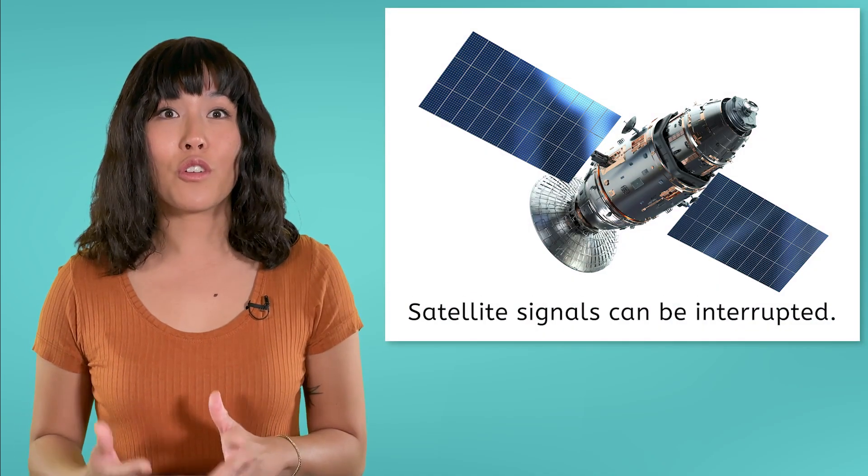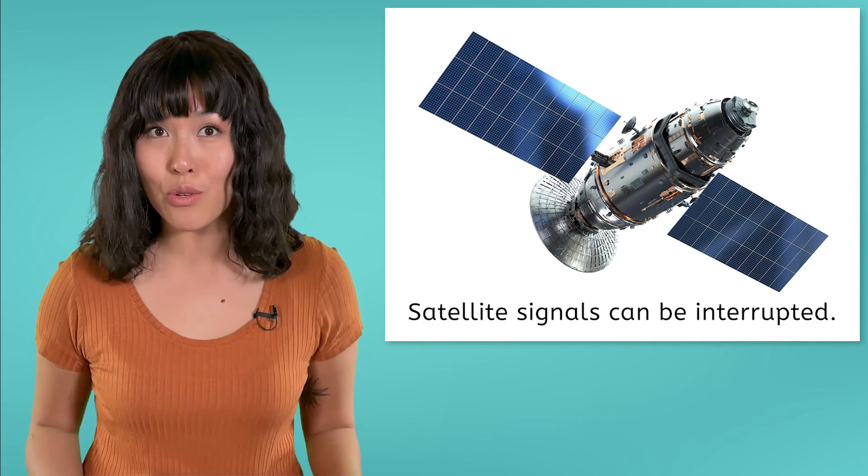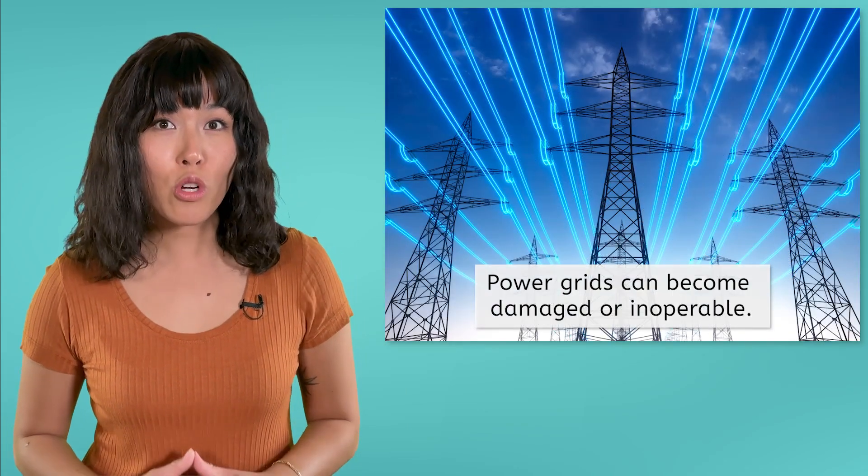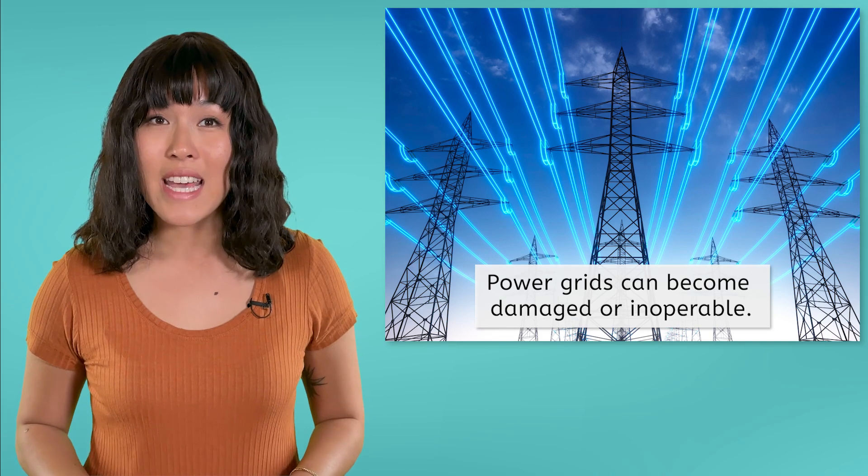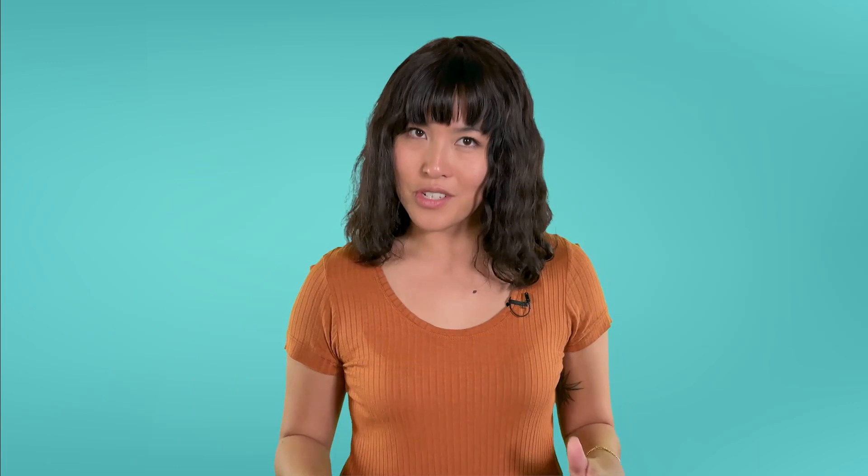Satellites sending signals for communication and position often see their signals interrupted. And even power grid systems on the ground can be damaged or become temporarily inoperable. Fortunately, geomagnetic storms rarely become intense enough to cause significant problems. And when they do, are usually short-lived.